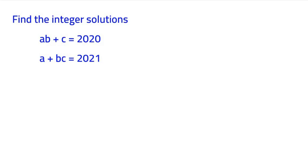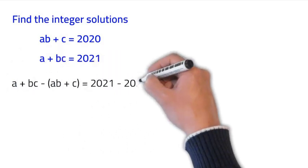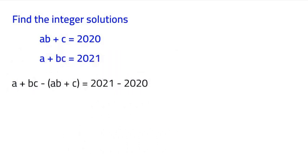Now, how we're going to do this is we're going to subtract the first equation from the second one. That would look like this. We have A plus BC minus AB plus C, which is equal to 2021 minus 2020.